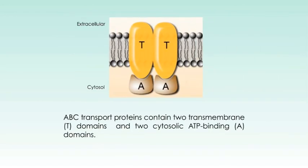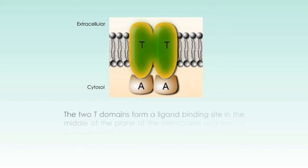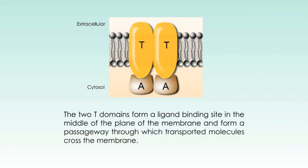ABC transport proteins contain two transmembrane T domains and two cytosolic ATP-binding A domains. The two T domains form a ligand-binding site in the middle of the plane of the membrane and form a passageway through which transported molecules cross the membrane. About 50 different mammalian ABC transporters are now recognized. Several are expressed in the liver, intestines, and kidney where natural toxins and waste products are removed from the body. Several human genetic diseases like cystic fibrosis are associated with defective ABC proteins.